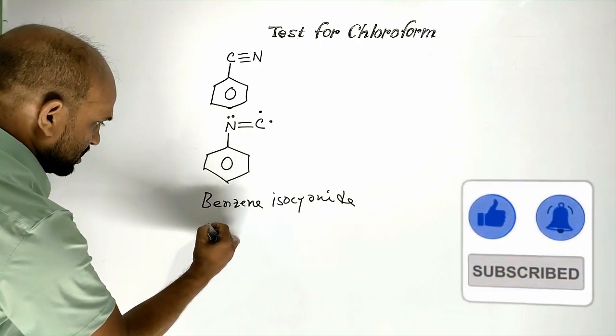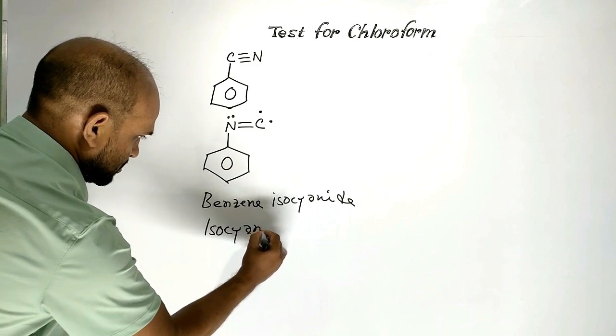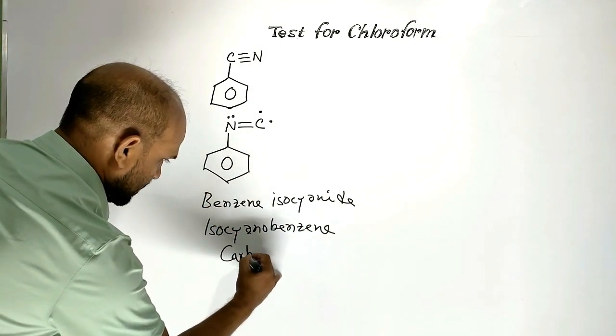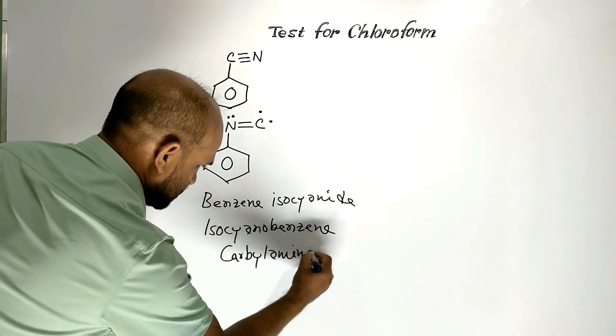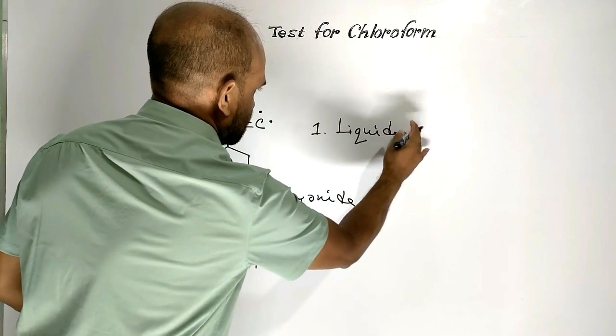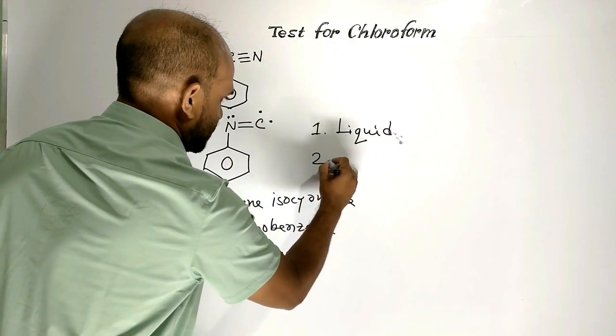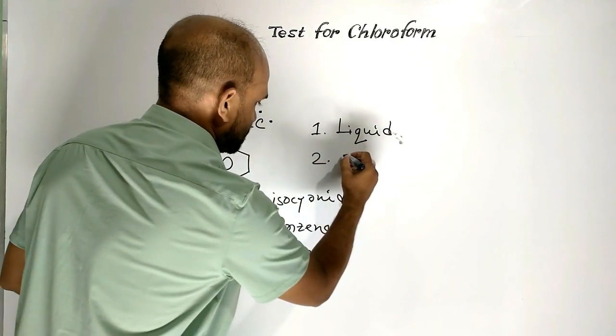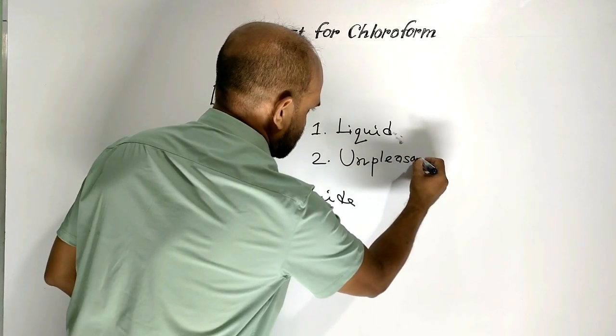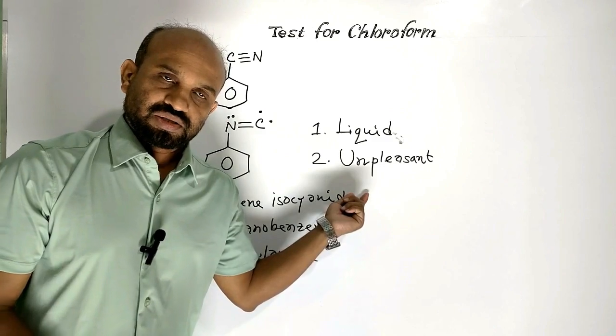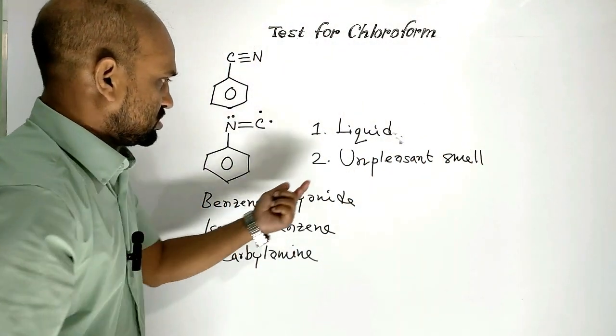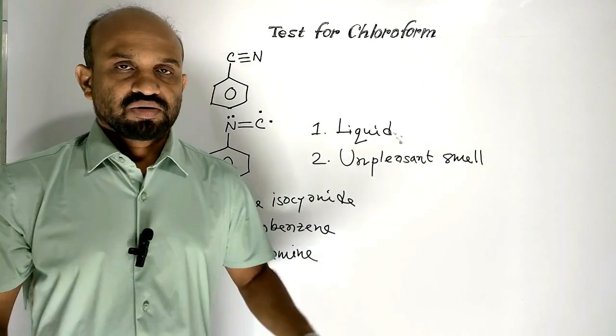This is also known as isocyanobenzene, also called Cabylamine. This compound is liquid under normal condition. This compound has a disagreeable or unpleasant smell. Phenyl isocyanide is responsible for this foul smell.